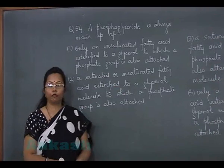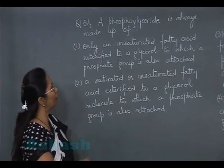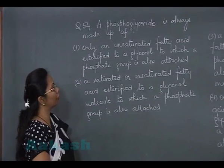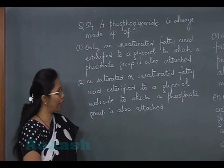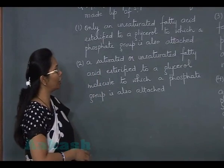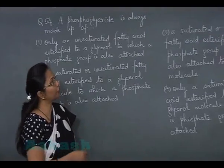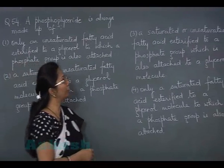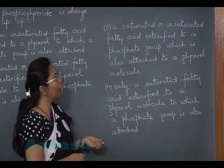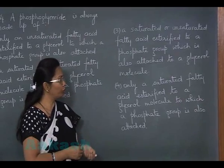Question 54: a phosphoglyceride is always made up of — option 1: only an unsaturated fatty acid esterified to a glycerol to which a phosphate group is also attached. Option 2: a saturated or unsaturated fatty acid esterified to a glycerol molecule to which a phosphate group is also attached. Option 3: a saturated or unsaturated fatty acid esterified to a phosphate group which is also attached to a glycerol molecule. Option 4: only a saturated fatty acid esterified to a glycerol molecule to which a phosphate group is also attached.